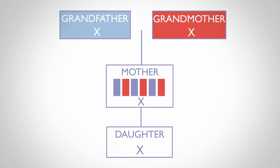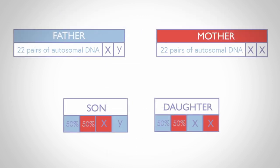For the moment, we will focus on autosomal inheritance. The amount of autosomal DNA inherited from a specific ancestor reduces by around half at each successive generation. You can see that children inherit around 50% of their autosomal DNA from each parent. In later generations, 25% is inherited from each grandparent, and 12.5% from each great-grandparent.